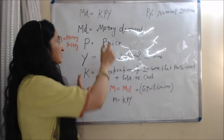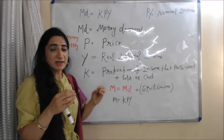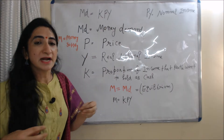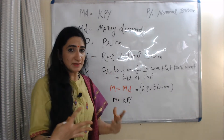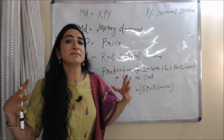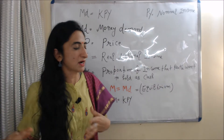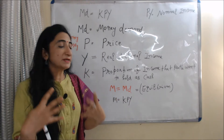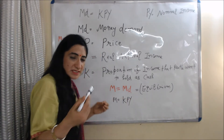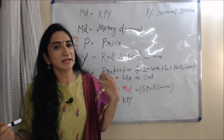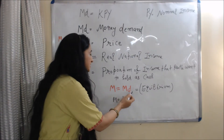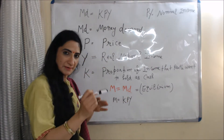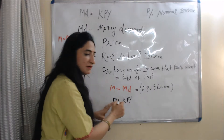So money demand MD is equal to KPY. We assume money supply is M. According to this theory, for the equilibrium condition, money supply must be equal to money demand — that is, M equals MD. Since MD equals KPY, we can substitute to get M equals KPY.